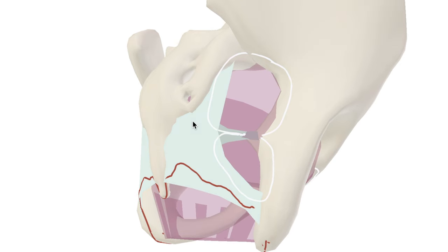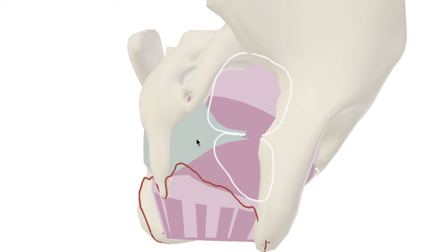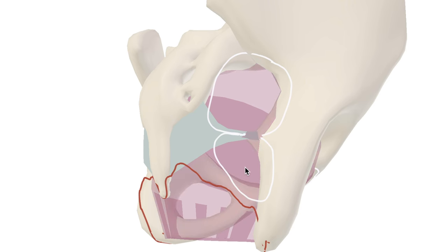I mentioned the sacrotuberous ligament before. This here is the sacrospinous ligament. They both serve to stabilise the bony pelvis.